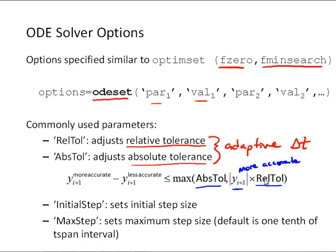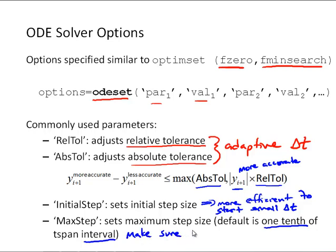Some other options that are commonly used are the initial time step, and you can use the initial time step to start with a smaller step size, perhaps, if you know that it's going to get to a small step size. This can be a little bit more efficient to start with a small delta T if you know you're going to end up there anyways. Or the maximum step size, which is a default to one tenth of T-span, of the interval in T-span, if you give T-span an interval. The maximum step size will keep delta T from being too large, so you make sure the output basically has enough points for a smooth plot, is one way to think about that.